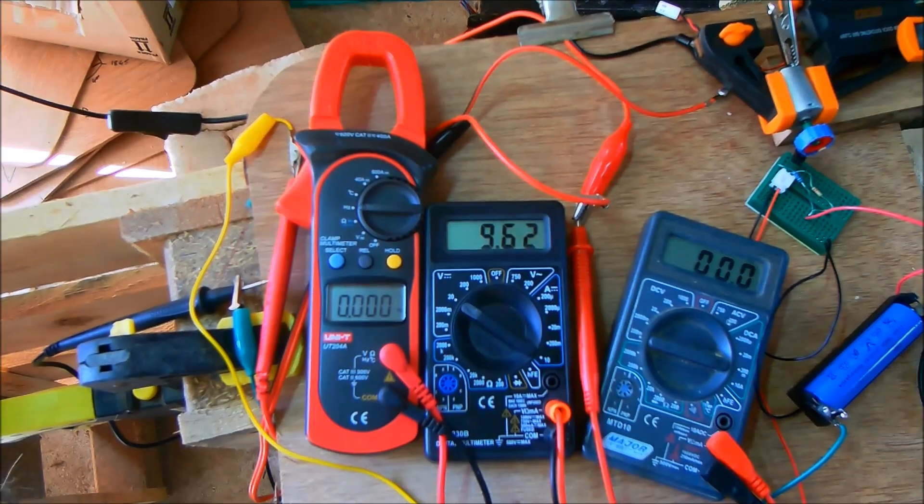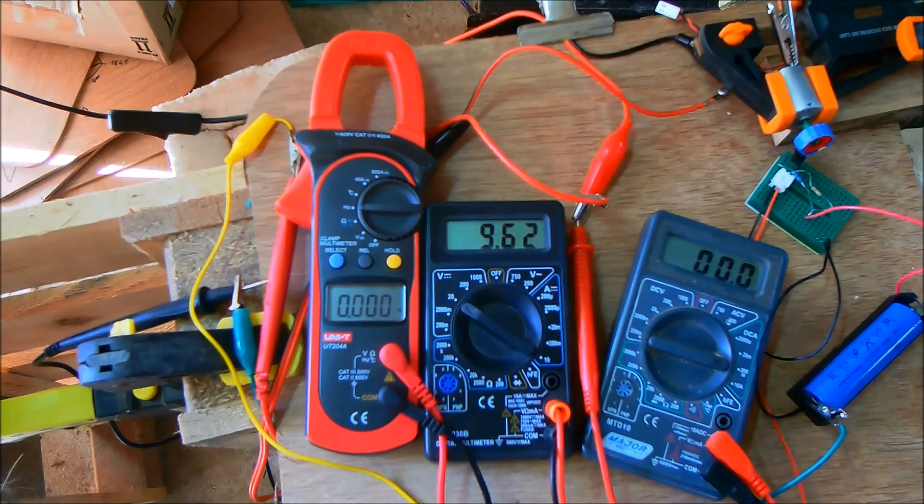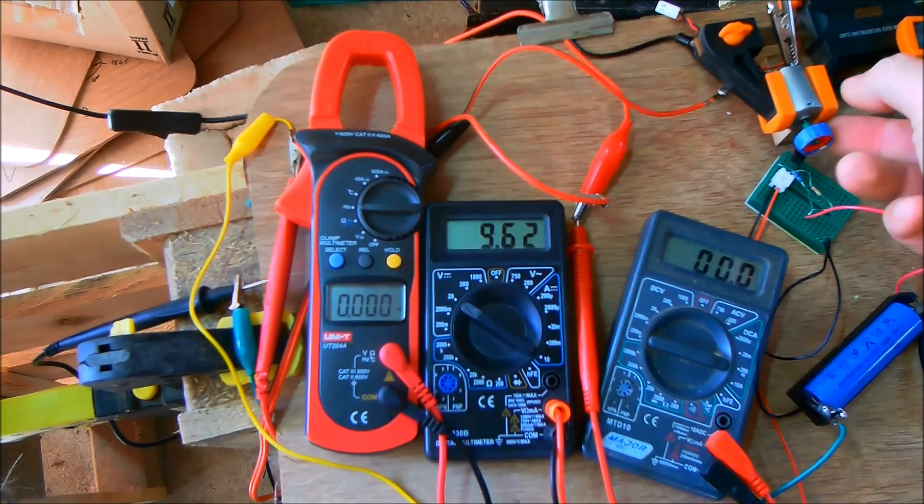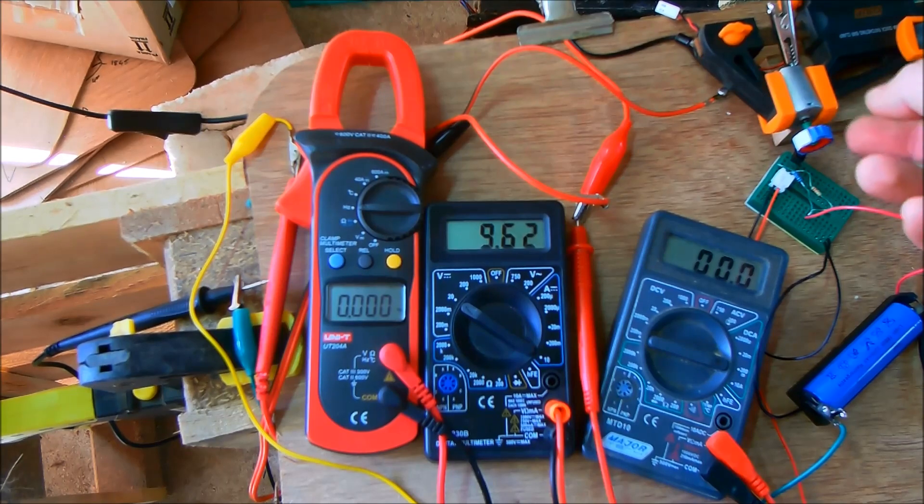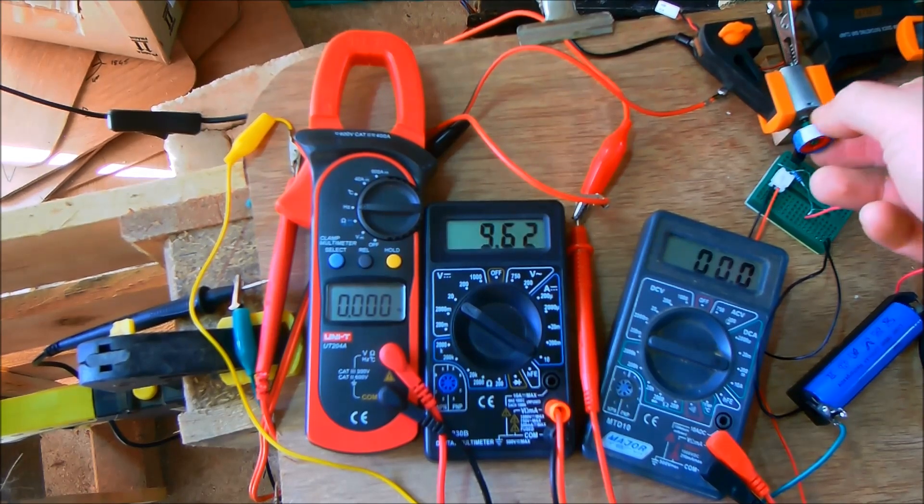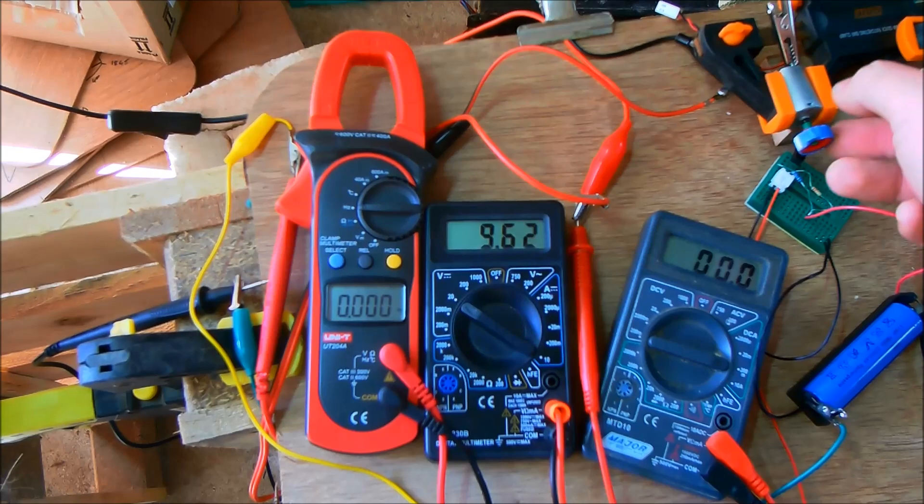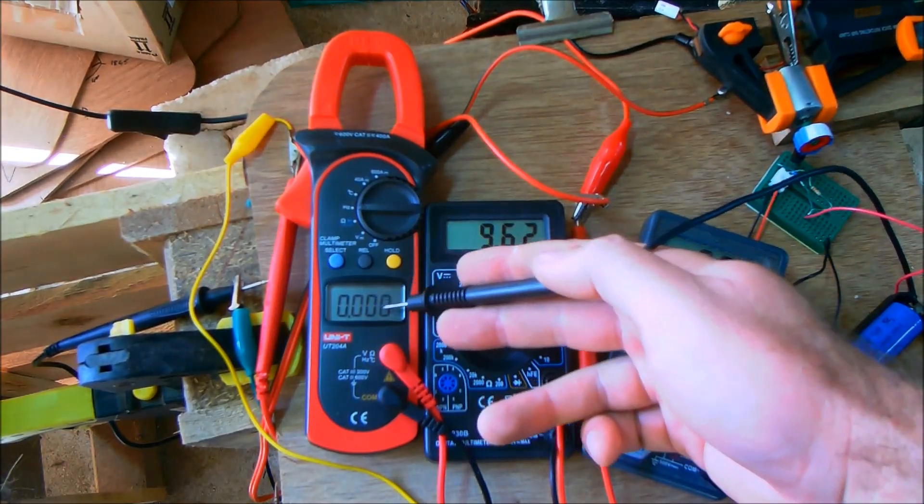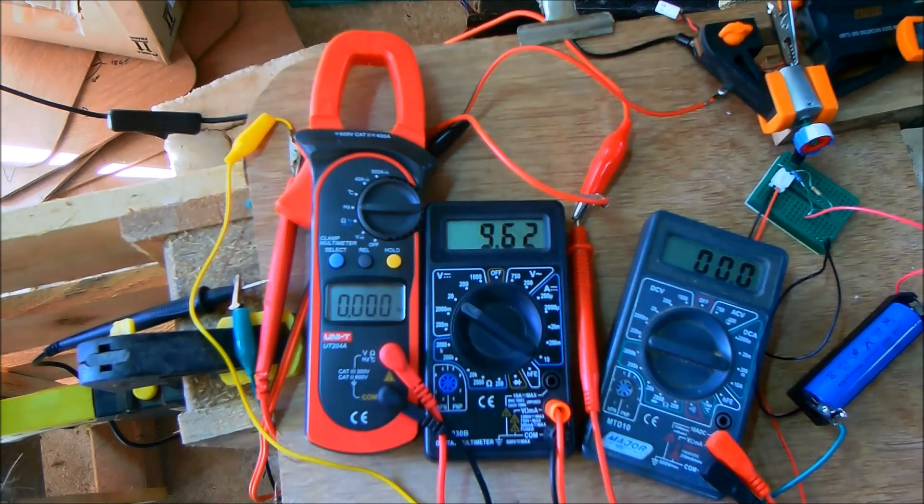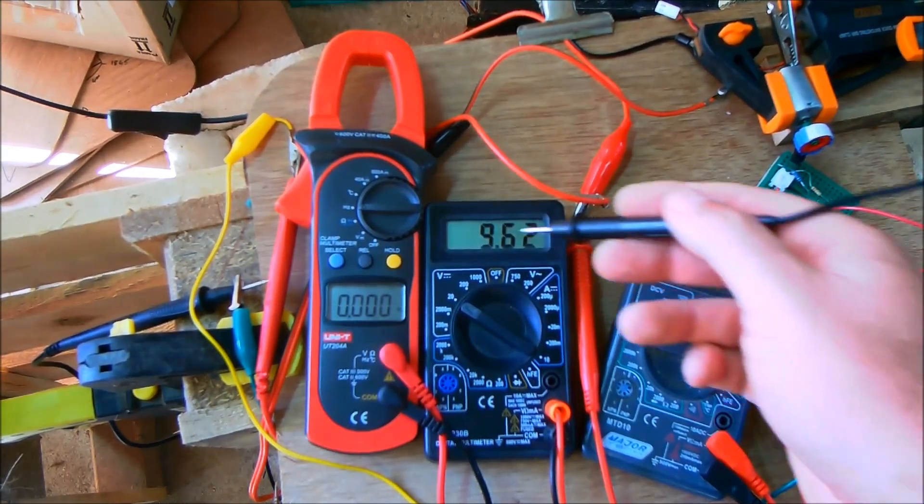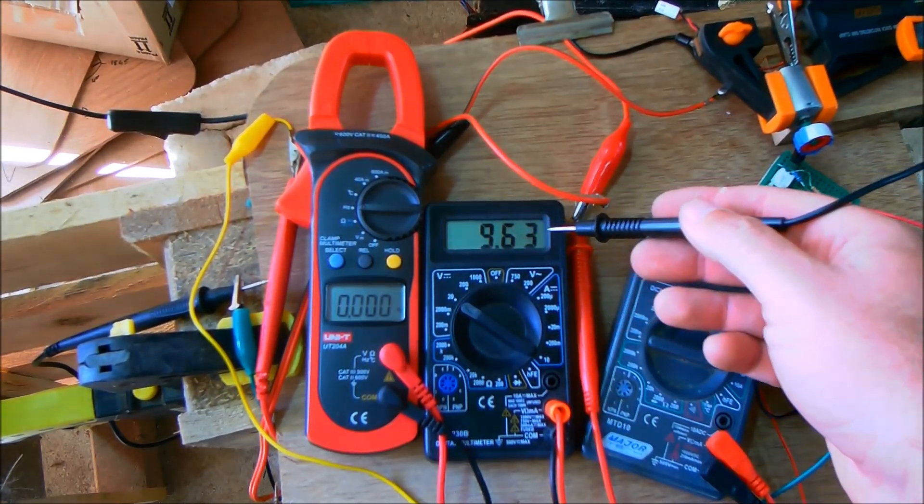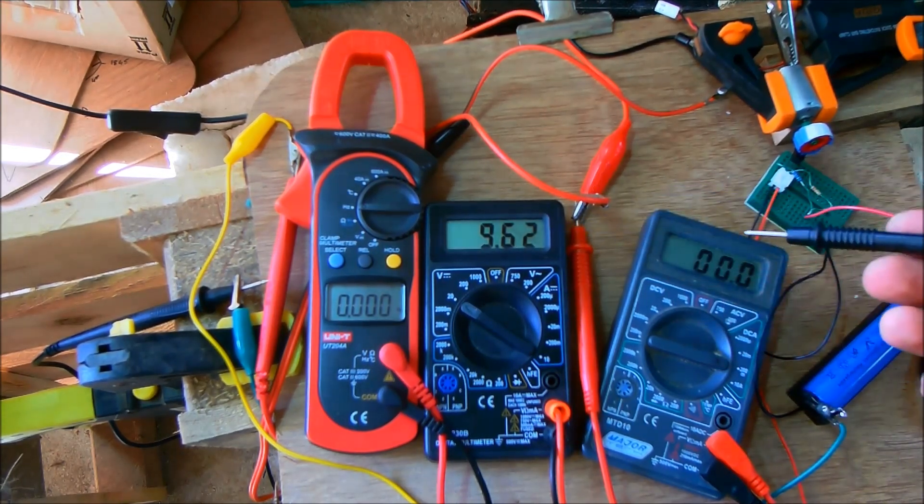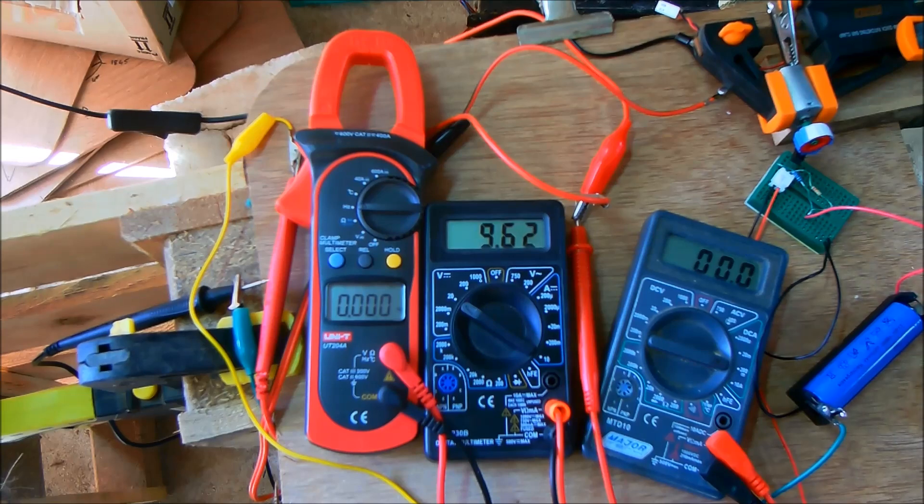The first test will be with a small brushed DC motor. All I have is a pinion and I'm using a photo reflective diode to pick up this white piece of tape which will give us a reading in Hertz, multiply that by 60 to get RPM. This reading here is the open circuit voltage from the solar panel and this will be the current through the system.